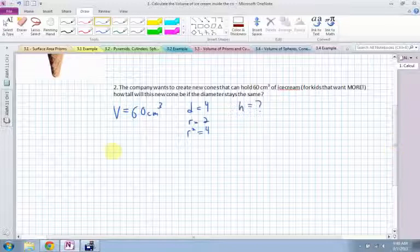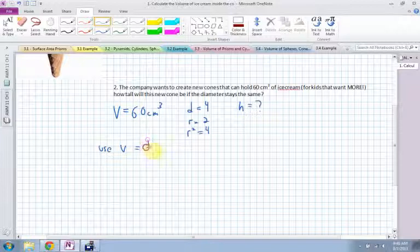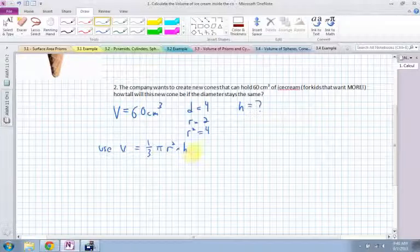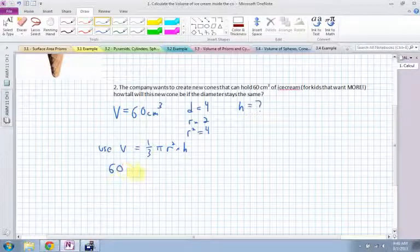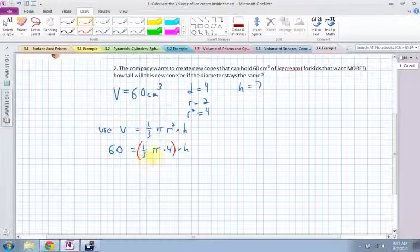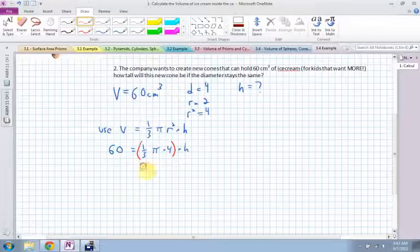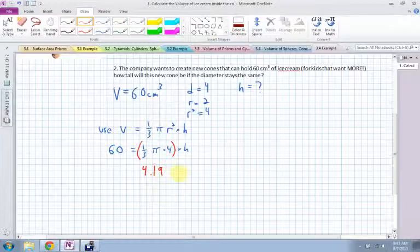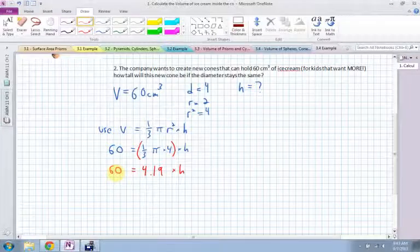It's still a cone, so we still use the volume is equal to one-third times pi times the radius squared times the height. Except this time we're looking for the height. So I can fill in all my other information. I can say, the volume is 60, equals one-third times pi, radius squared is 4, height I don't know. Now, this bit here, I can actually work out. If I multiply it through, one-third times pi times 4, should get about 4.19 times my height, should be still equal to 60. I haven't done anything else.